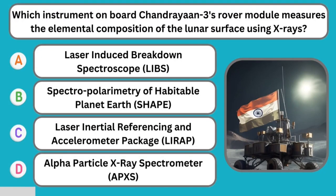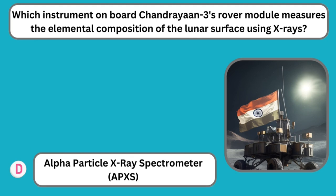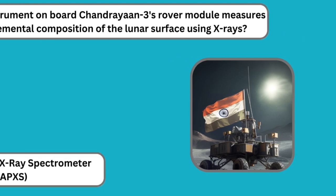Question number twenty-eight: Which instrument on board Chandrayaan 3's rover module measures the elemental composition of the lunar surface using X-ray? The correct answer is the Alpha Particle X-ray Spectrometer, APXS.